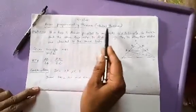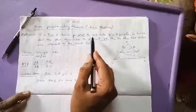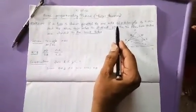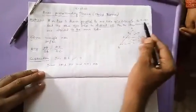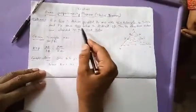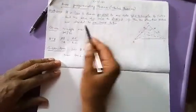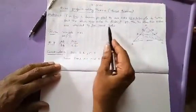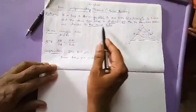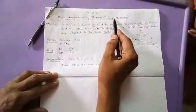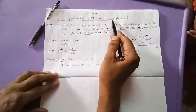The Basic Proportionality Theorem states: if a line is drawn parallel to one side of a triangle to intersect the other two sides in distinct points, then the other two sides are divided in the same ratio. This is the statement of Thales theorem. Thales is a great mathematician.